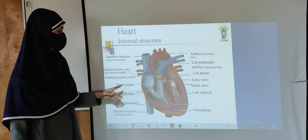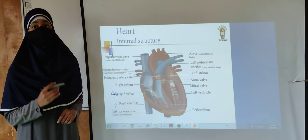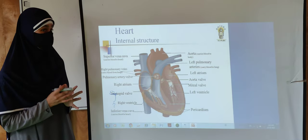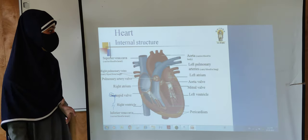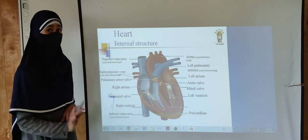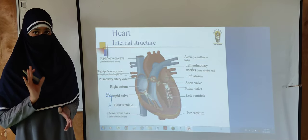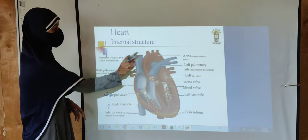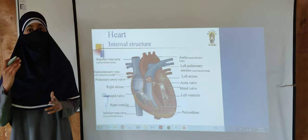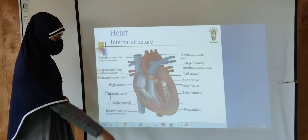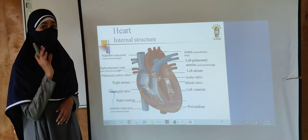Here are the right pulmonary veins and here are the left pulmonary veins. The pulmonary veins carry oxygenated blood from the lungs to the heart. The pulmonary artery carries deoxygenated blood from the heart to the lungs. The aorta carries oxygenated blood from the heart to the rest of the body. The pericardium acts as mechanical protection for the heart and the big vessels.